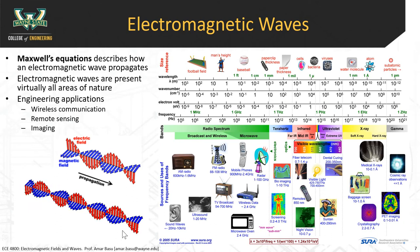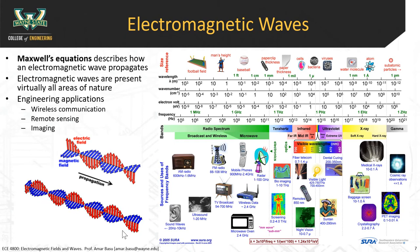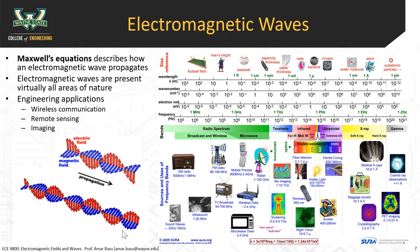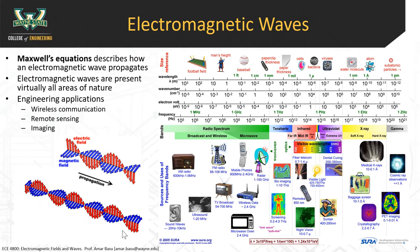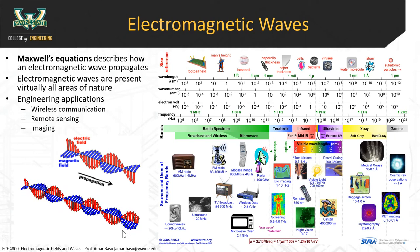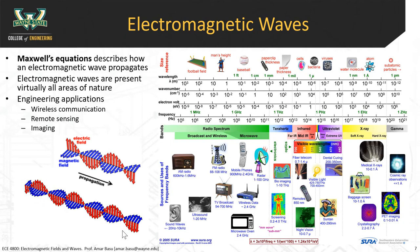Electromagnetic waves include light and radio waves, but there's a whole spectrum of different types. They're categorized based on wavelength. High energy waves have a low wavelength and low energy waves have a high wavelength.